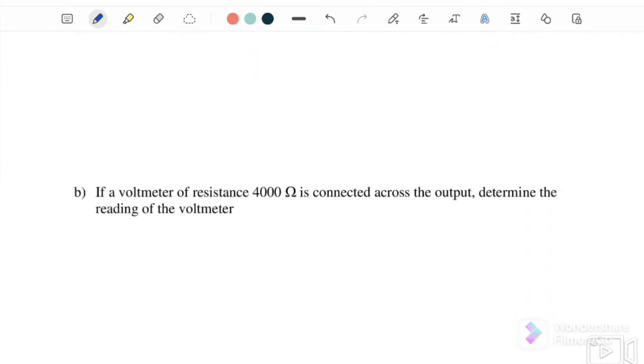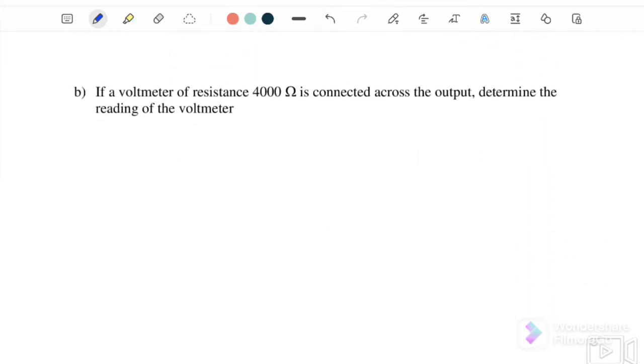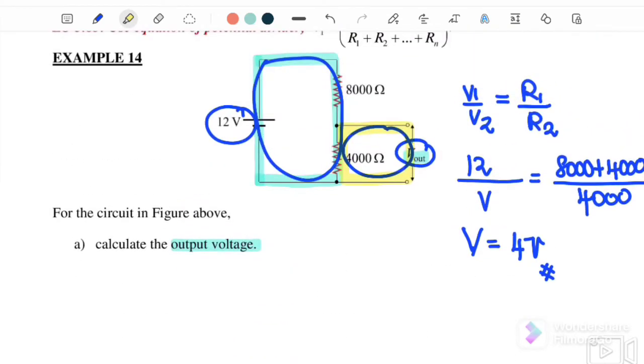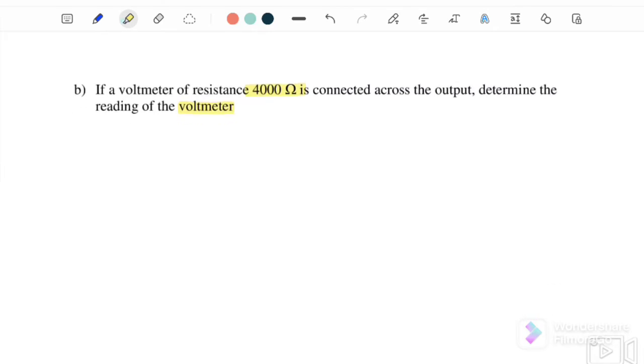Next, if the voltmeter of resistance 4,000 ohm is connected across the output, determine the reading of the voltmeter. For question A, the voltmeter connected had no internal resistor. But for question B, there is an internal resistor inside the voltmeter.